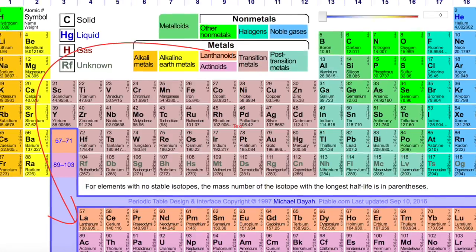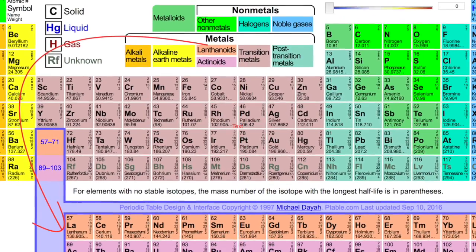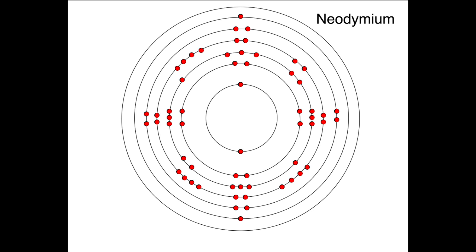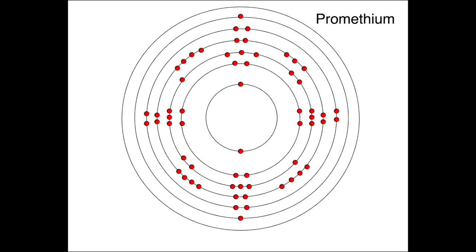And this is where the table splits where lanthanides have just begun. Lanthanum, cerium and praseodymium. Neodymium's next to promethium, then 62's samarium, europium.